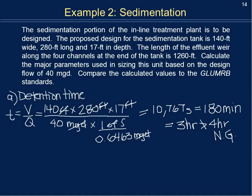If this design doesn't meet standards, we would need to make the tank larger to slow down the flow and increase detention time — perhaps making it longer or adjusting the width. This iterative process is common in design: calculate, check against standards, and adjust dimensions accordingly.